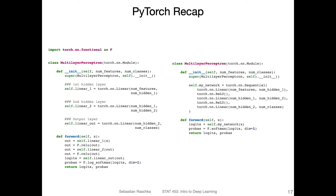Before we take a look at these nonlinear activation functions more closely, let us briefly recap the PyTorch API. This is something I just copied and pasted from lecture five, where we already had a multi-layer perceptron, just to illustrate how the PyTorch API works.